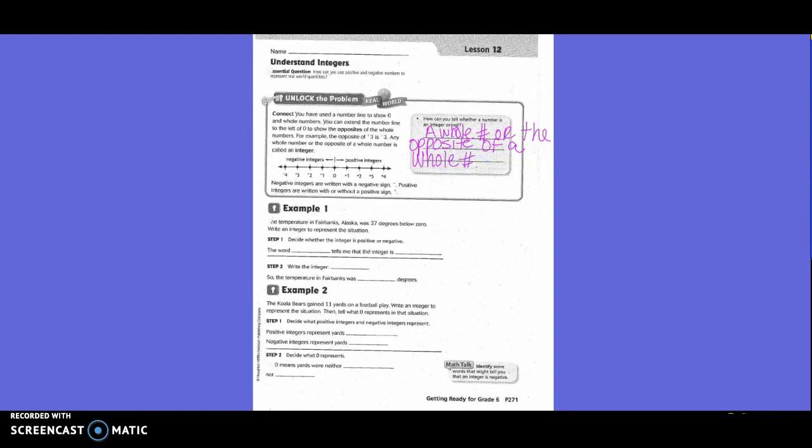Example 1. The temperature in Fairbanks, Alaska was 37 degrees below zero. Write an integer to represent the situation. Step 1: Decide whether the integer is positive or negative.